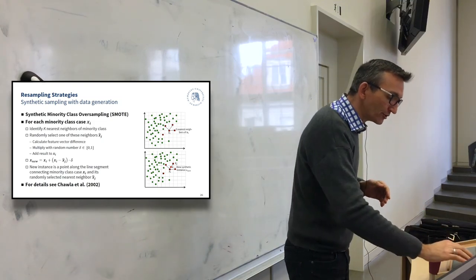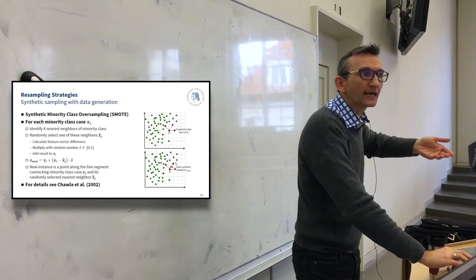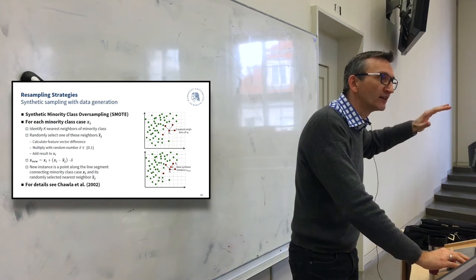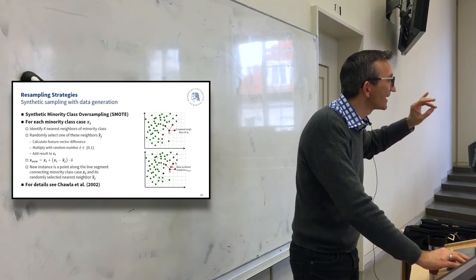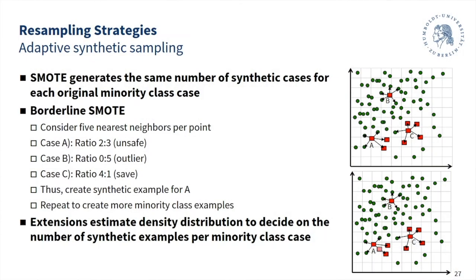SMOTE has some issues, and we can think about what we can do better. The random oversampling through creating synthetic instances makes sense in principle, but can we improve upon it? Yes — for example, we don't have to pick the minority instance randomly. If we do that as in the original SMOTE, it might be the case that — look at this data to get an idea — look at this data point B...